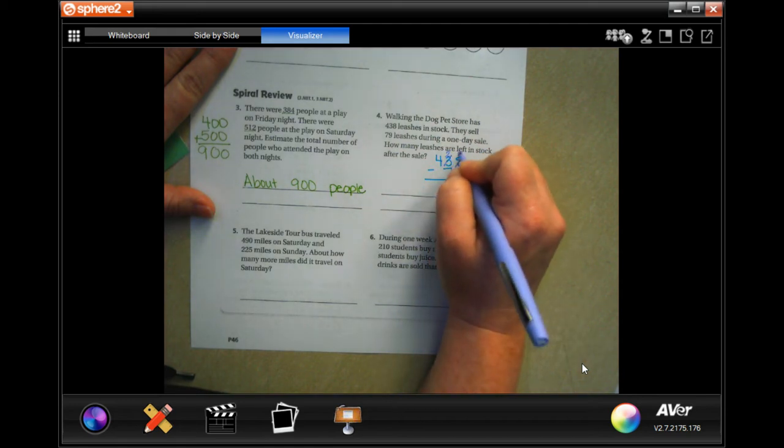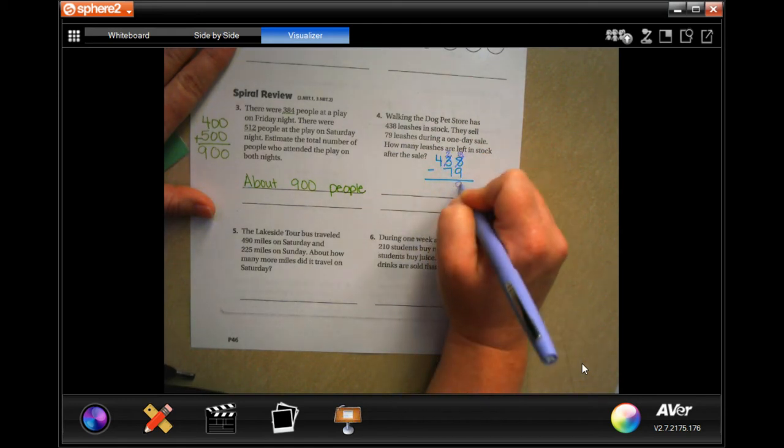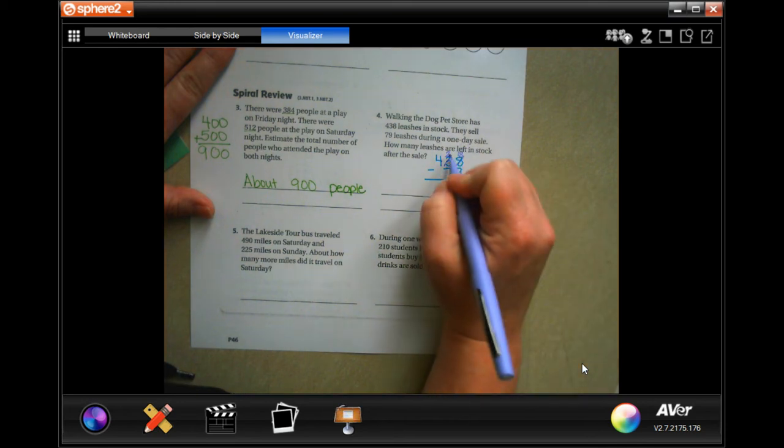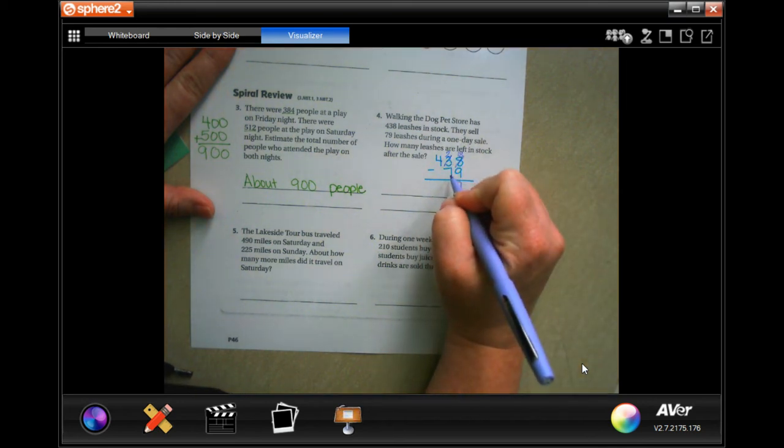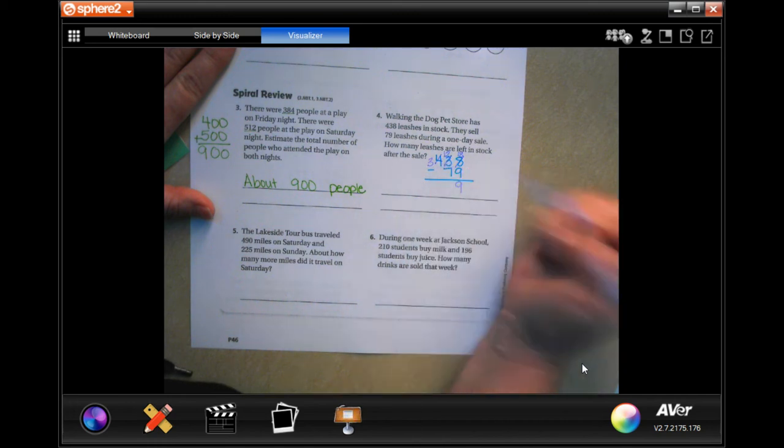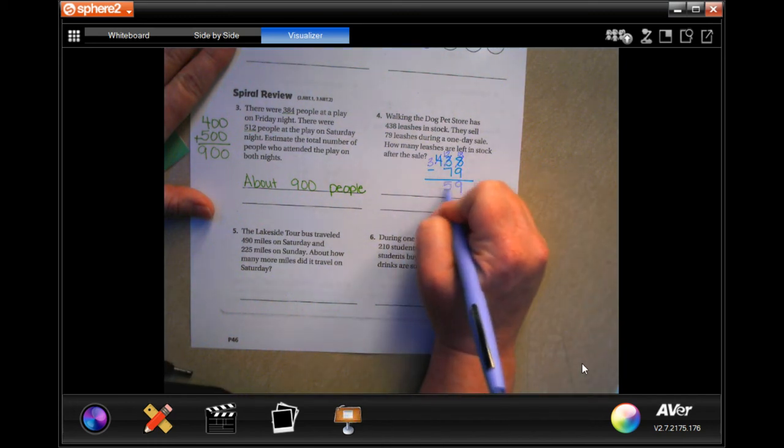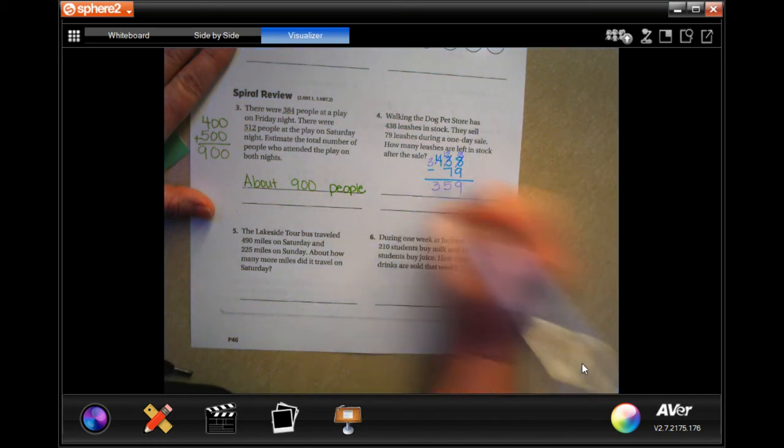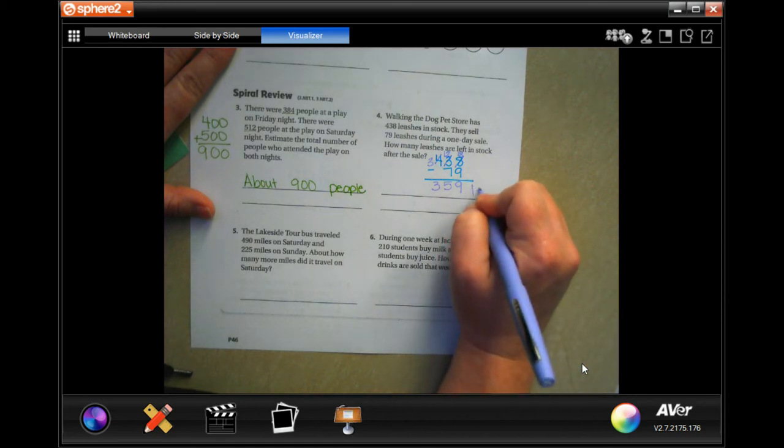So I'm going to go next door. I'm going to make that three and do a two. And now my eight is an 18. Well, 18 take away nine is nine. Two cannot take away seven. And since we're not subtracting up, we're going to go next door and make that a three. And now it's 12 minus seven, which is five. And then I'm going to bring that three down. So 359 leashes.